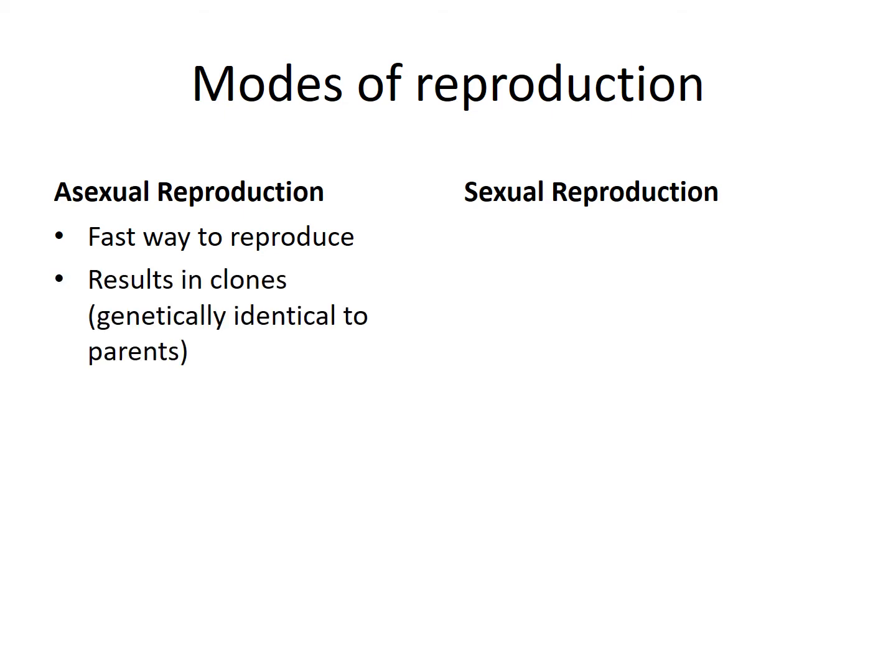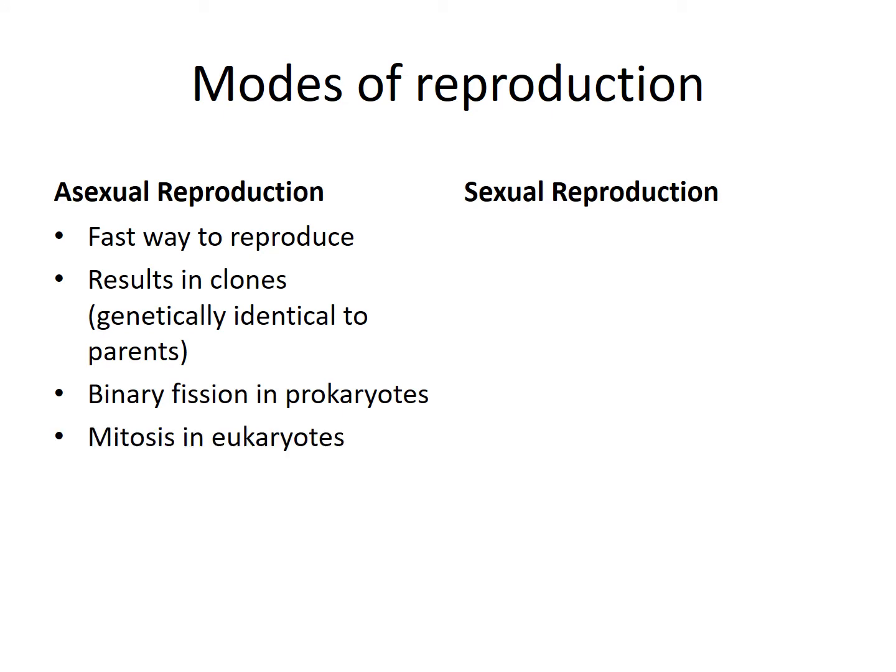Offspring from asexual reproduction are genetically identical to each other and to the parent they came from. The parent doesn't really exist anymore — it just divides into two separate cells. Those two new cells, which we call daughter cells, are identical to each other and the parent. In prokaryotes, this process is called binary fission. In eukaryotes, it's called mitosis. At the end of this presentation, we'll go into how binary fission works in prokaryotes.